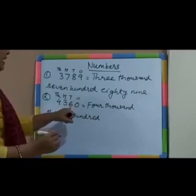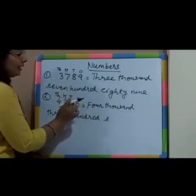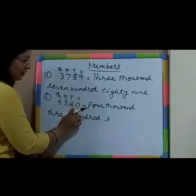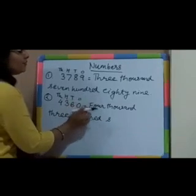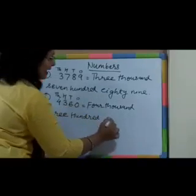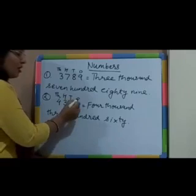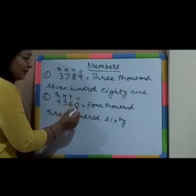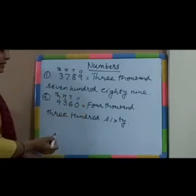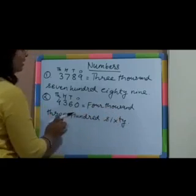On the 10s place, we are having 6. Here is a little bit of change — on the 1s place, we are having 0. So, on the 1s place, we will not write anything. So, at the 10s place, we will write 60. Why are we writing 60? Because at the 1s place, we are having 0 — we cannot write 0 at the 1s place. So, what is the number name of this number? Four thousand three hundred and sixty — 4,360.